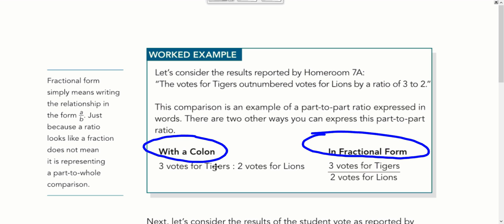So we can write that in word form with the word to (T-O). We could also use a colon to represent that. So we have three votes for tigers compared to two votes for lions. The colon basically does the same thing as the word to. We can also write it in fraction form. So the first set gets put above the second thing. In this case, it's three votes for tigers on top, two votes for lions. So there's just three ways of writing the same comparison, the same ratio.